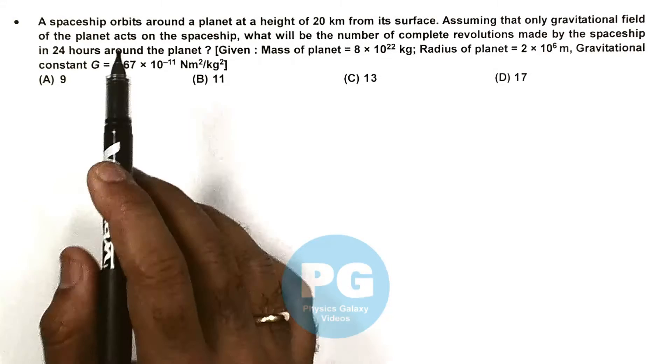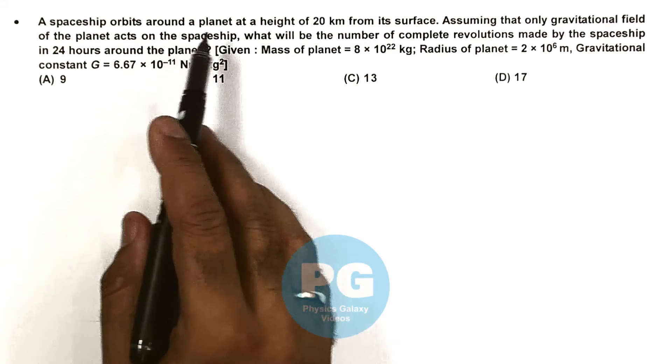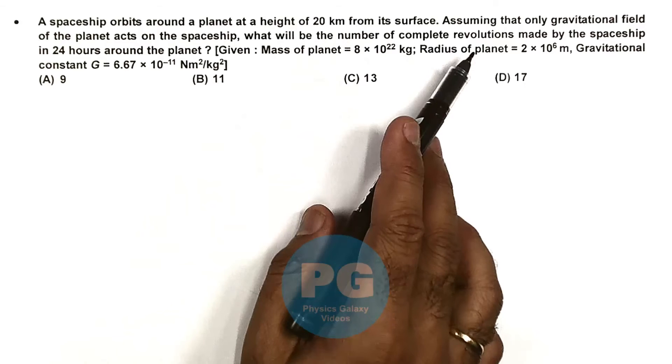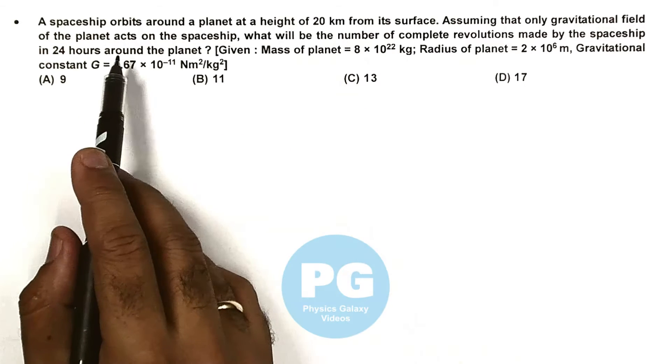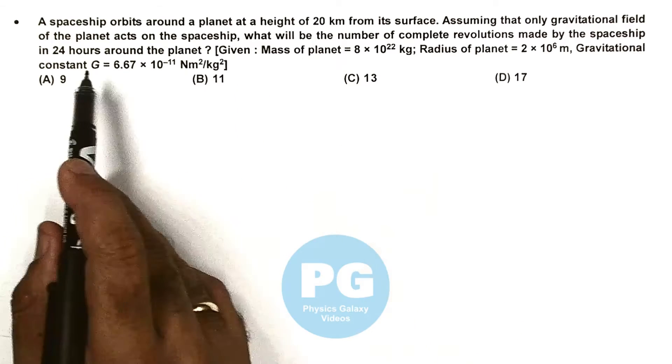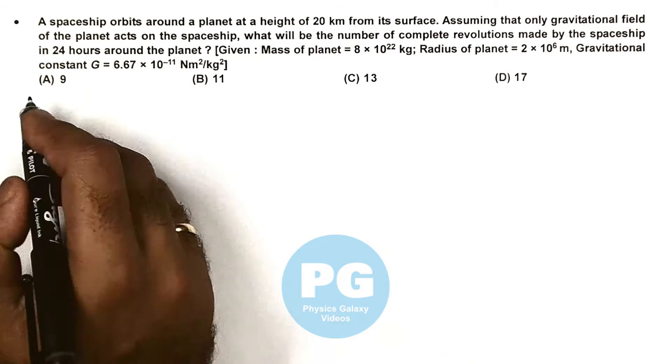In this question, a spaceship orbits around a planet at a height of 20 km from its surface. Assuming that only the gravitational field of the planet acts on the spaceship, what will be the number of complete revolutions made by the spaceship in 24 hours around the planet?